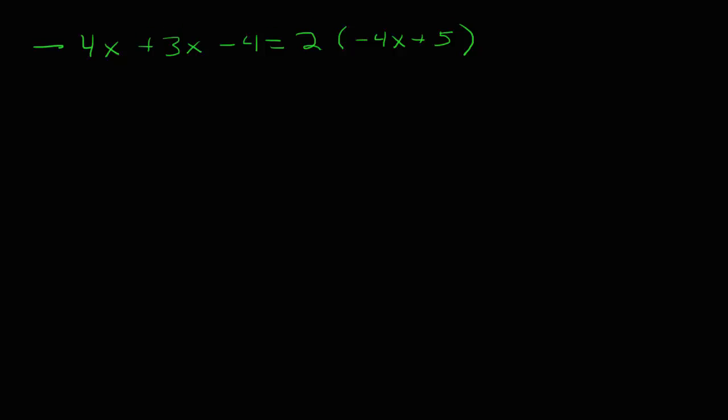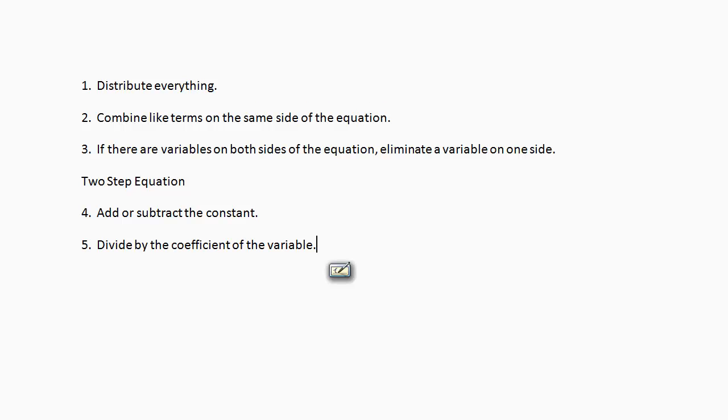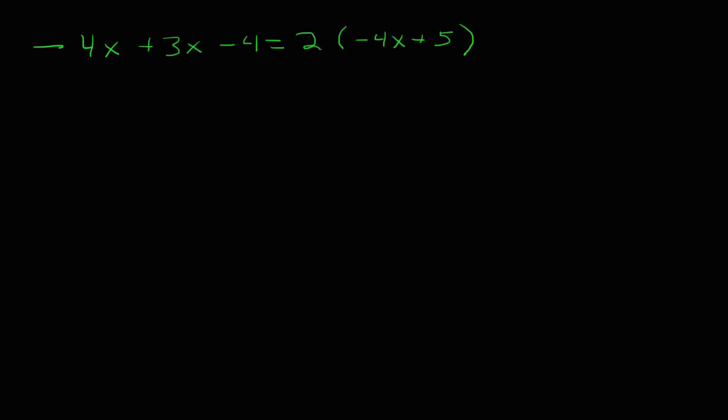Our first step says that we want to distribute everything, so that's what we'll do first. We will distribute what we can distribute. We've got negative 4x plus 3x minus 4 equals negative 8x plus 10. We have now distributed everything that we can distribute in our problem.